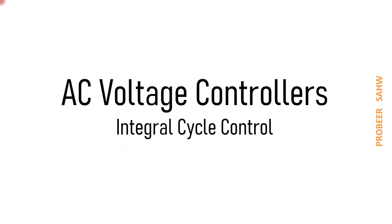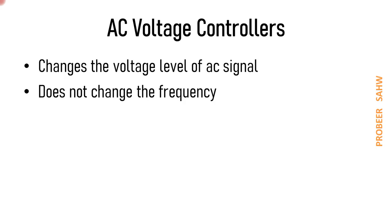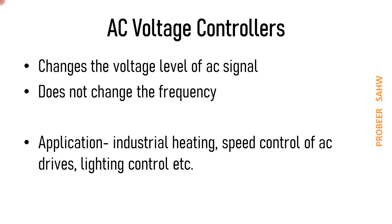Today we are going to discuss integral cycle control of AC voltage controllers. AC voltage controllers change the voltage level of an AC signal but do not change the frequency. They are basically power converter circuits where the output voltage level differs from the input, while the input and output frequency remain the same. AC voltage controllers find application in industrial heating, speed control of AC drives, lighting control, etc.